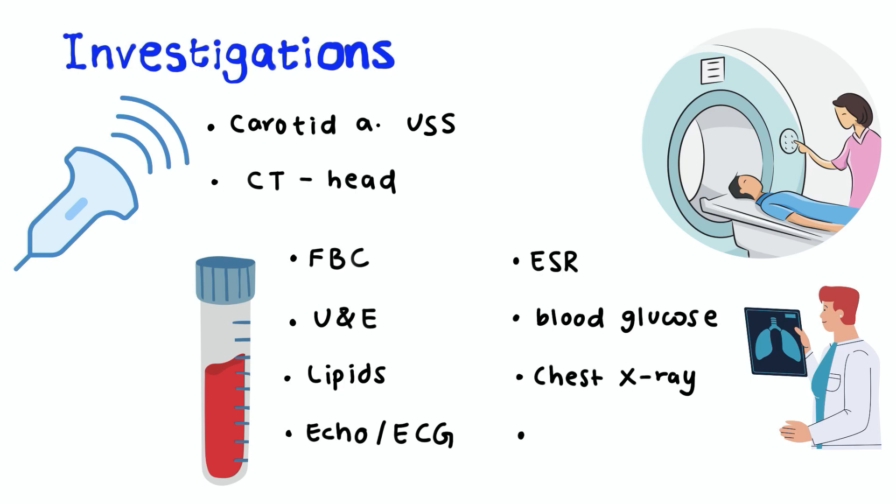12-lead ECG must be obtained to evaluate for atrial fibrillation. An echocardiogram can be useful to evaluate for valvular or mural thrombi. A non-contrast CT of the brain must also be performed initially. After specialist assessment in the TIA clinic we can consider doing an MRI to determine the territory of ischemia or to detect hemorrhage and other alternative pathologies.